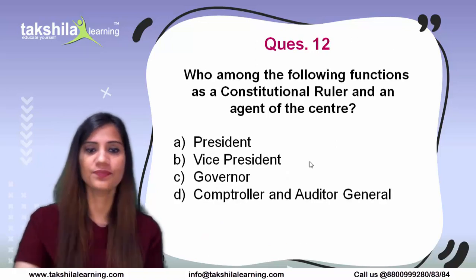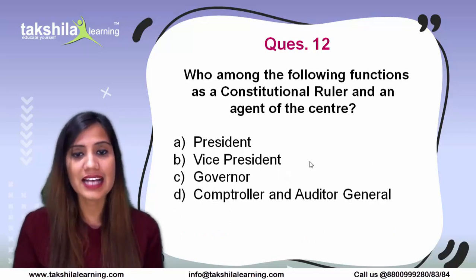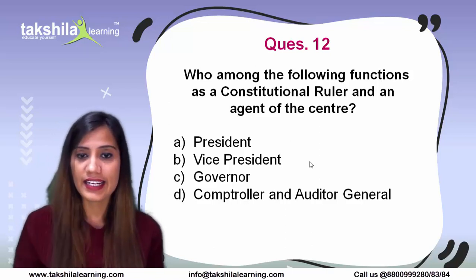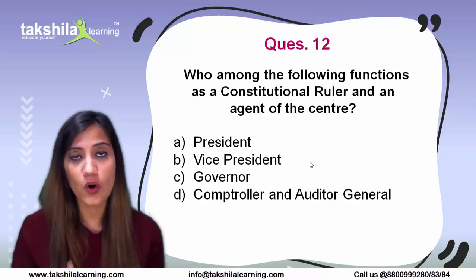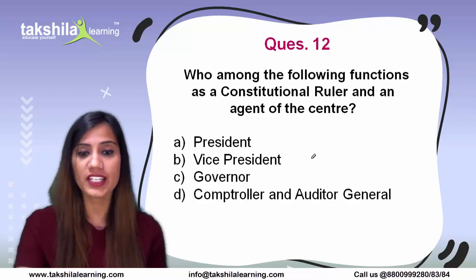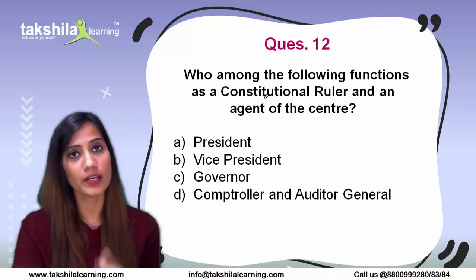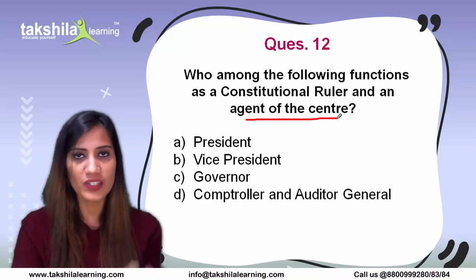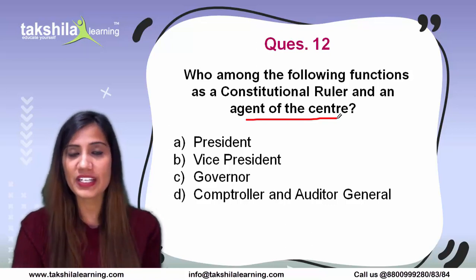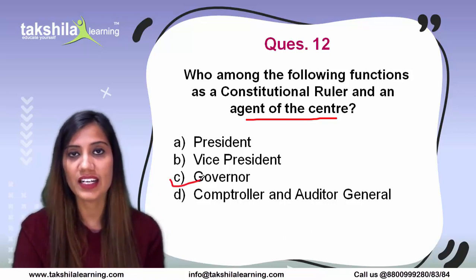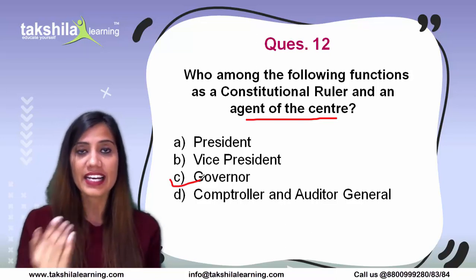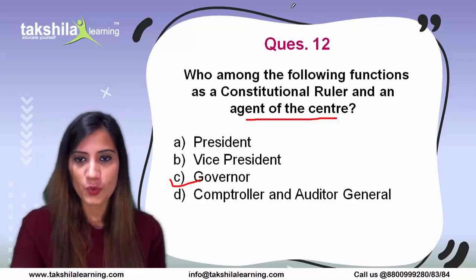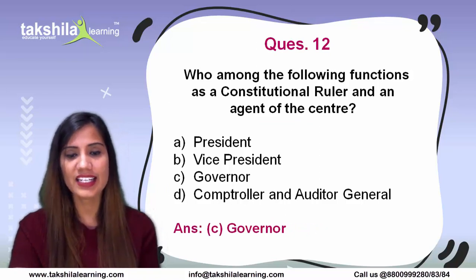Next question: who among the following functions as a constitutional ruler and an agent of the centre? This is an important question asked in exams. The answer is the Governor — the Governor plays the role of the centre's agent and acts as the constitutional head for a particular state. Question number 12: correct answer is option C.